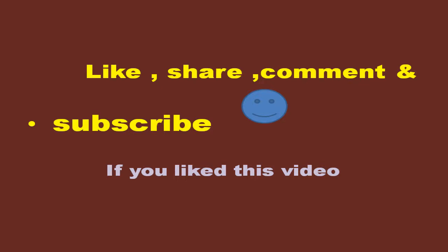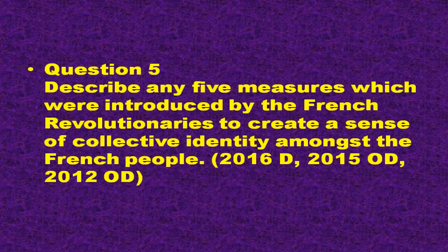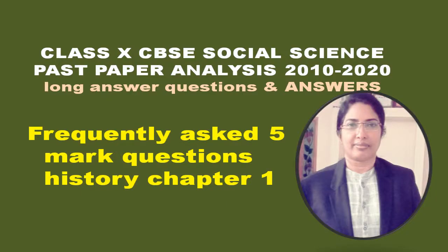The revolutionaries were determined to create a new sense of unity and nationhood. They emphasized the concept of France being the fatherland or 'la patrie' for all French people, who were from now on addressed as citizens or 'citoyen'. They were given the tricolor flag, the three colors representing liberty, equality and fraternity.